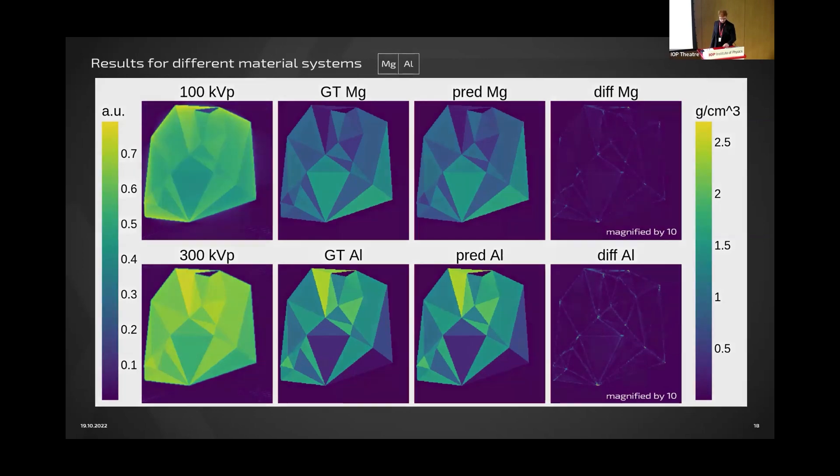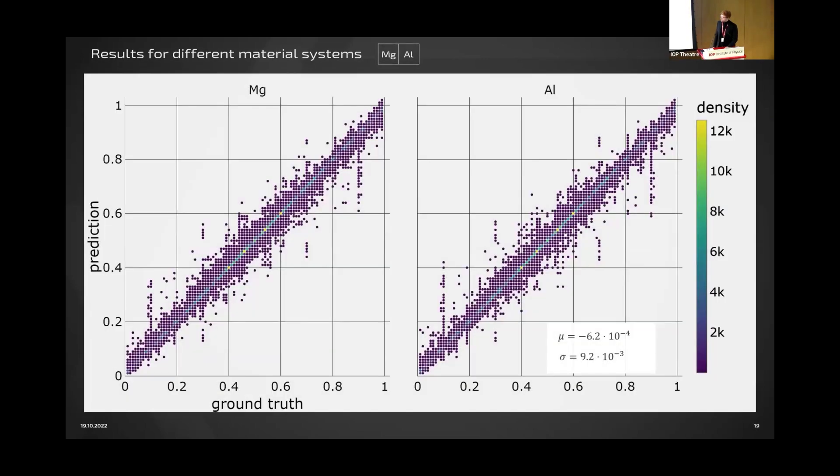This is a more quantitative overview. For magnesium, on the left, we see when we're looking at the ground truth value of 0.6, we're getting very good predictions of 0.6. The model has very low standard deviation and it's also almost zero center, so it's very good prediction. It's working pretty well in this case for magnesium and aluminum.